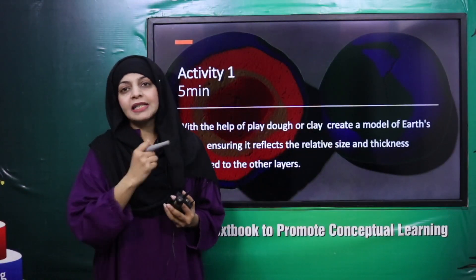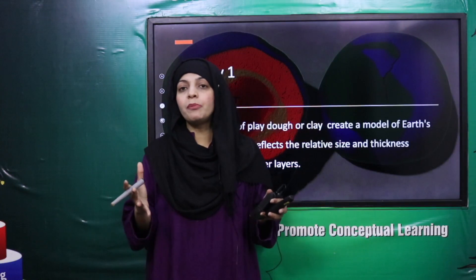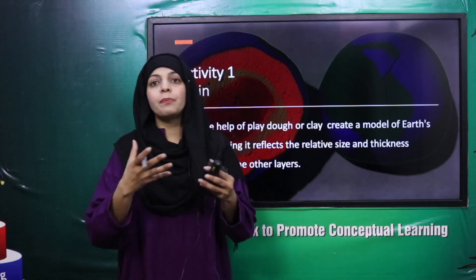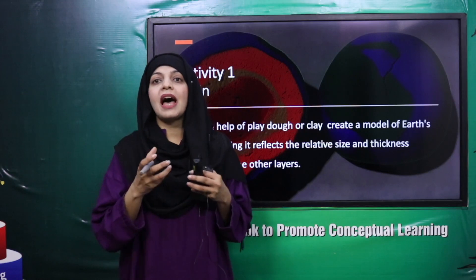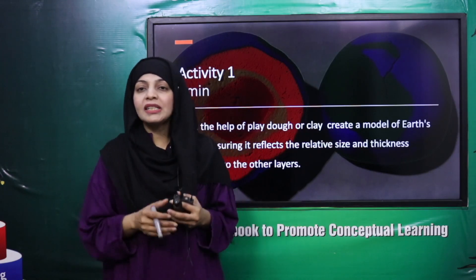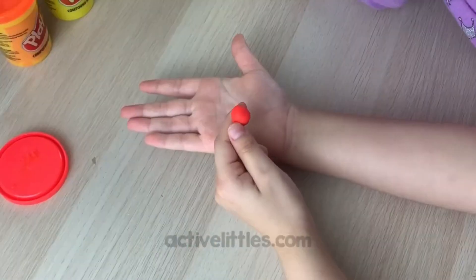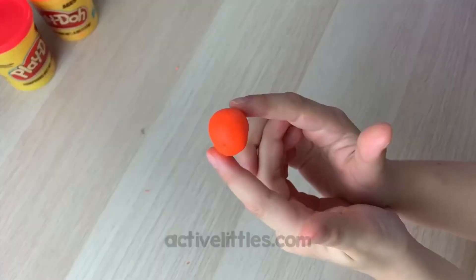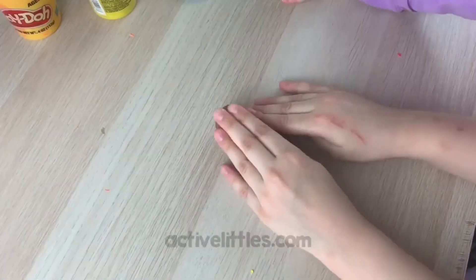Before we move on to study about each layer, let's do a quick activity. My dear teachers, the lesson plans attached with this lecture have full briefing on how to conduct this activity. Quickly divide the students into groups and provide them with play-doh. Students will make the layers of the earth. You need to start from the inner core - make a ball for the inner core - and then make the outer core, then the mantle, and then the crust.